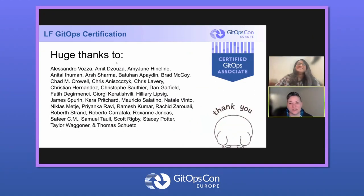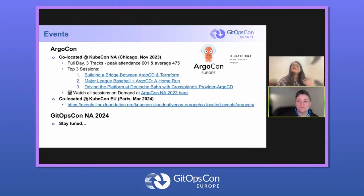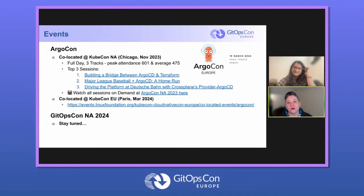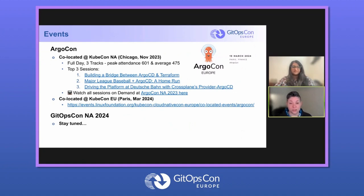For events, we have some news from ArgoCon, which was co-located at KubeCon in Chicago back in November. This was a full day, three tracks, and peak attendance was around 601, with an average of about 475 people in attendance during any session. The top three sessions are listed here — you can go and check those out. I've also included a link on this slide for the entire playlist, so you can go back and watch all of these sessions from their original recordings.